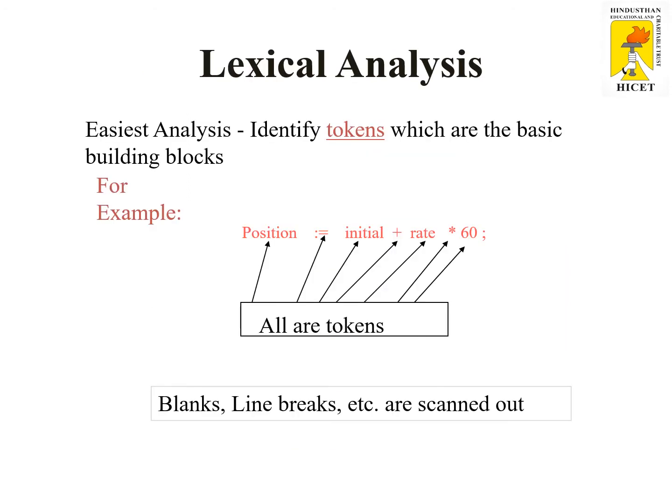Lexical analysis is the first phase of the compiler. It identifies tokens, which are the basic building blocks. For example: position = initial + rate * 60. All the characters are read and produced as tokens. The main function of lexical analysis is to scan the input from left to right, produce the tokens, and blanks and line breaks are scanned out.